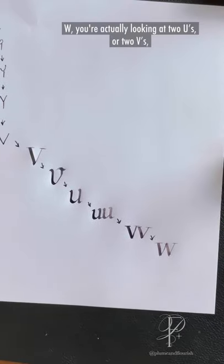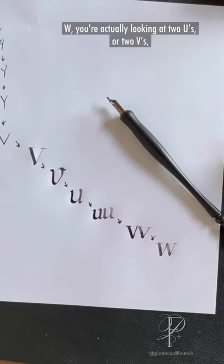So when you see a capital W, you're actually looking at two U's, or two V's, or a PEG.